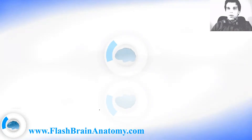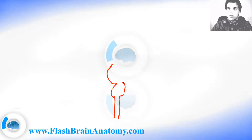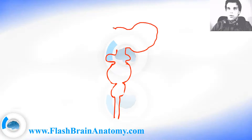First I will illustrate how the brain is being developed. We had the neural tube, which kind of develops into some neural bubbles. Here you have one bubble, then you have another bubble, and then you have something like this. And at the end it has this kind of shape.